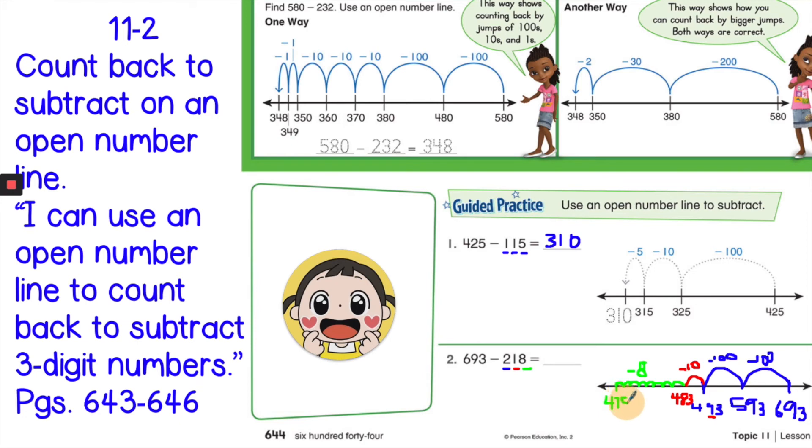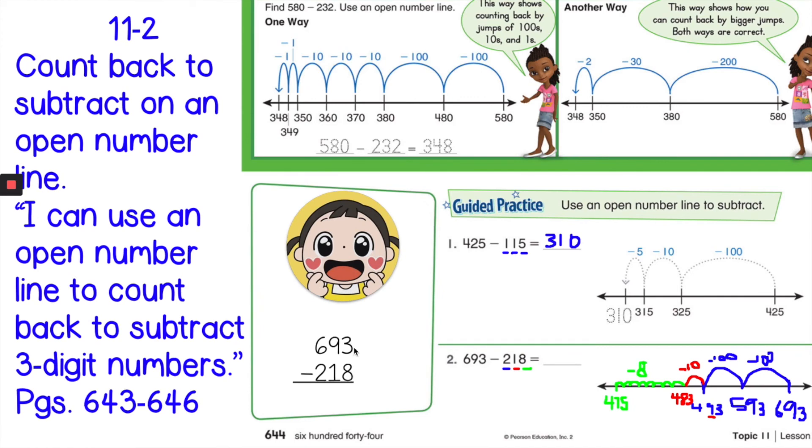And I would always check my answer by stacking them. So three minus eight. Can we do three minus eight? No, we cannot. So what do we need to do? We need to go next door, get 10 more. Three asks the nine, can I borrow a 10? Nine says, sure, and turns into an eight. And then we know three turns into 13. So remember, we can either cross it out and write 13, or you can just add the tens here. 13 minus eight equals five. Eight minus one equals seven. Six minus two equals four.